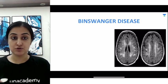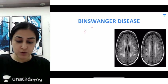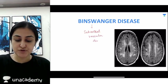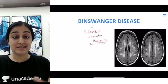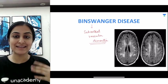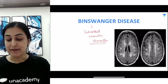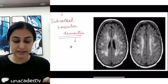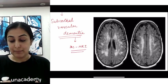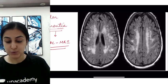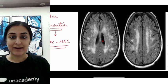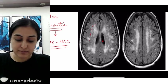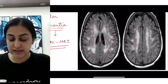Moving on to Binswanger disease or syndrome: this is a cause of subcortical vascular dementia. Vascular dementia leads to a step-ladder type of decline, predominantly in executive function. The investigation of choice is MRI, and here on a FLAIR image, the ventricles show dark CSF while edema appears hyperintense — there are patchy multifocal hyperintensities in the subcortical white matter.